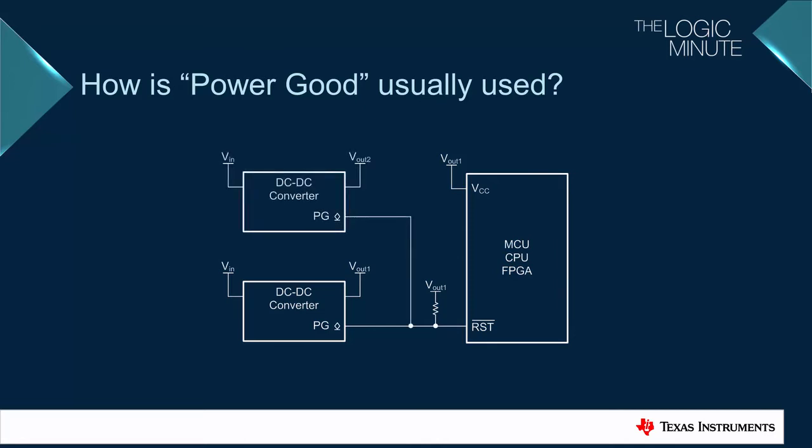If there is more than one supply rail that needs to be regulated, the open drain power good outputs can be tied together directly to produce a wired AND configuration. The reset pin will remain low until all power good pins go into a high impedance mode.